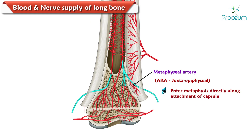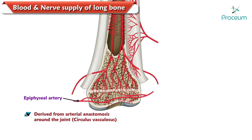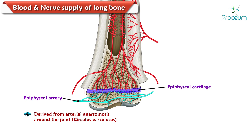The metaphyseal arteries, also known as the juxta-epiphyseal arteries, are derived from the neighboring arteries and enter the metaphysis directly along the attachment of the capsule. Epiphyseal arteries are derived from the arterial anastomosis around the joint known as circulus vasculosis. They enter the epiphysis either directly or after piercing the epiphyseal cartilage.